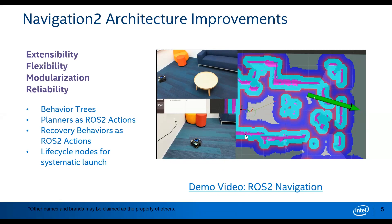This is a short demo video we shot on the Dashing release over the summer. It shows a couple of different camera angles, and the view on the right is the RViz view of the robot moving in the cost map.